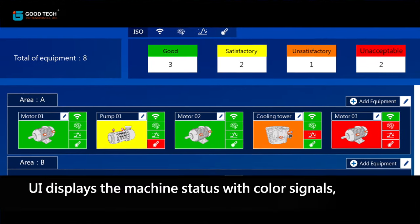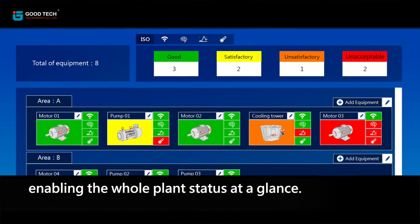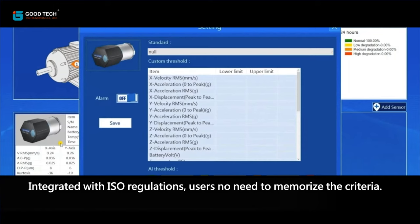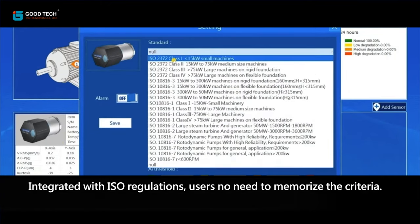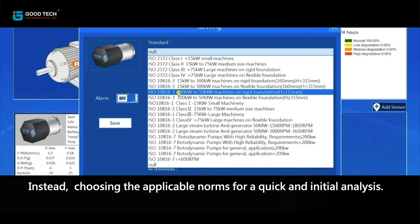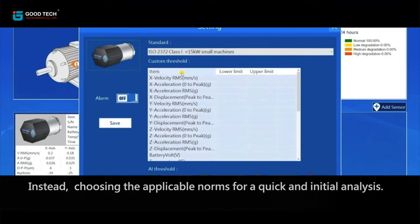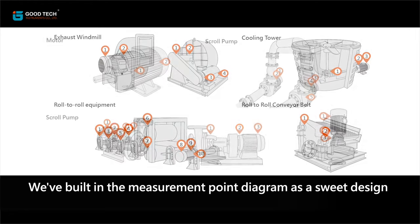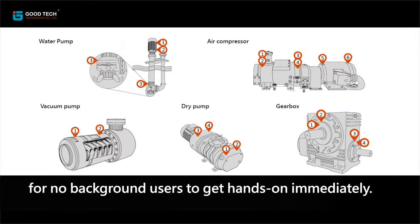The UI displays machine status with color signals, enabling a whole-plant status overview at a glance. Integrated with ISO regulations, users don't need to memorize criteria — they simply choose the applicable norm for a quick initial analysis. Not sure about sensor mounting locations? A built-in measurement point diagram serves as a suite design so users with no background can get hands-on immediately.